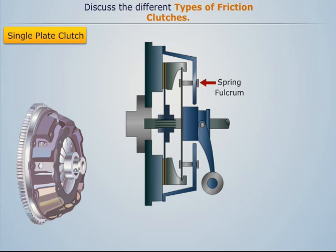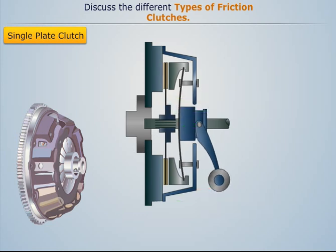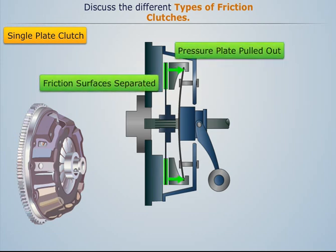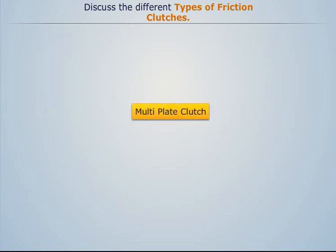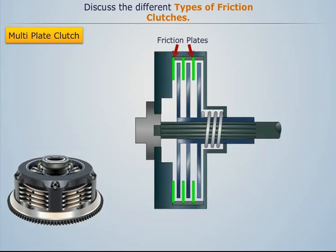The diaphragm spring is hinged to the clutch cover to provide a fulcrum while disengaging. For disengaging the clutch, the clutch pedal is pressed, which pushes the throwout bearing. This pushes the diaphragm spring at the center and in turn pulls the pressure plate off, thereby releasing the clutch plate.